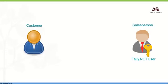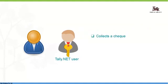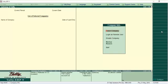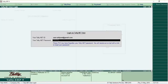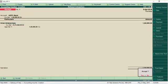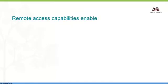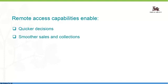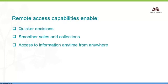Let us assume that your salesperson meets a customer and collects a check. A money receipt has to be given to the customer. In such a case, the salesperson can access Tally ERP9 running in your office by simply logging in as a remote user. There, he can enter the receipt voucher and print the money receipt on the customer's printer. These possibilities enable quicker decisions, smoother sales and collection activities as information can be accessed anytime from anywhere.